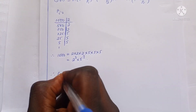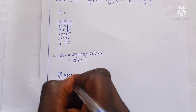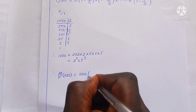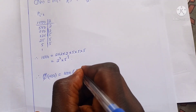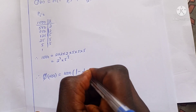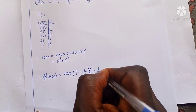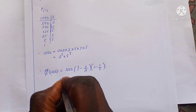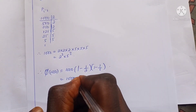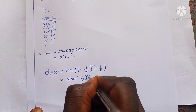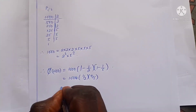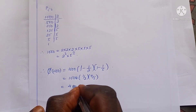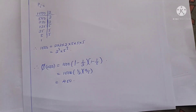Therefore, phi of 1,000 equals 1,000 times (1 minus 1/2) times (1 minus 1/5), which is 1,000 times one-half times four-fifths, which gives us 400. So between 1 and 999, there are exactly 400 numbers that are co-prime to 1,000.